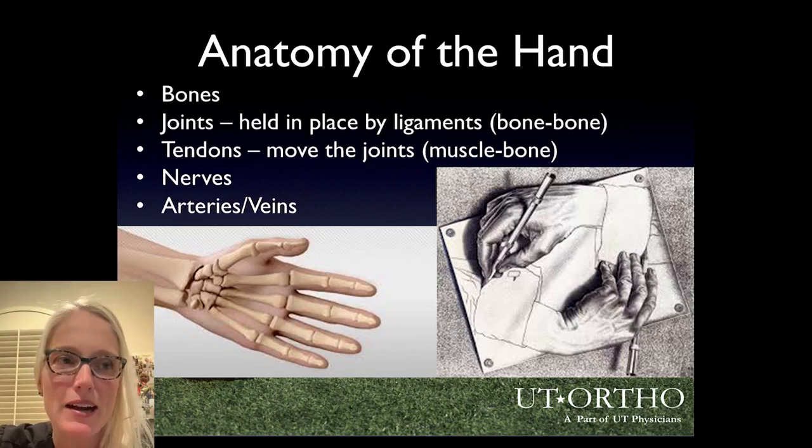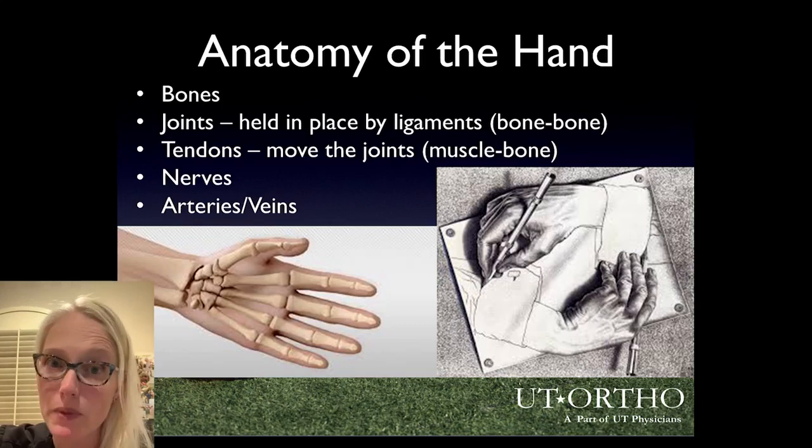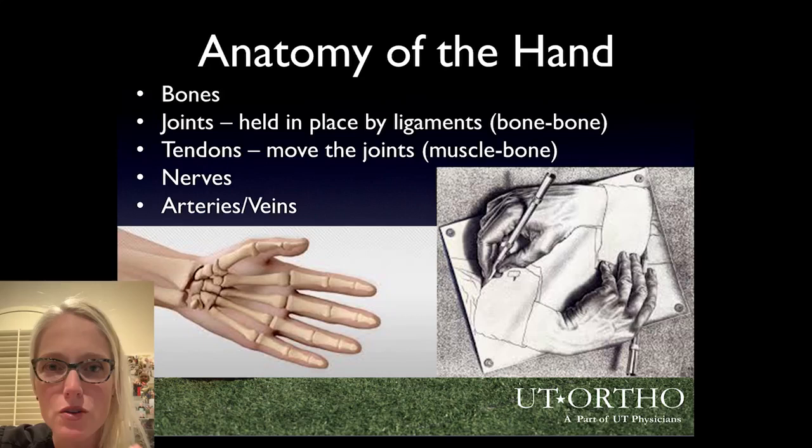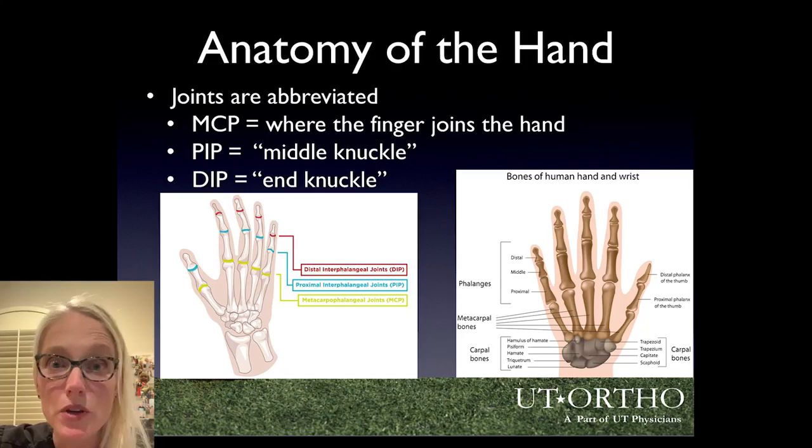The anatomy of the hand is quite beautiful and complex — one of the things I love most about it. There are a number of bones in the fingers and wrist. The joints are held in place by ligaments, which connect bones to bones. The tendons serve to move the joints, and those attach muscles to bone. There are also nerves, arteries, and veins, but those aren't really relevant for what we're going to talk about today.